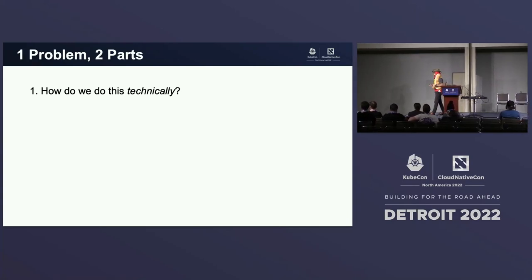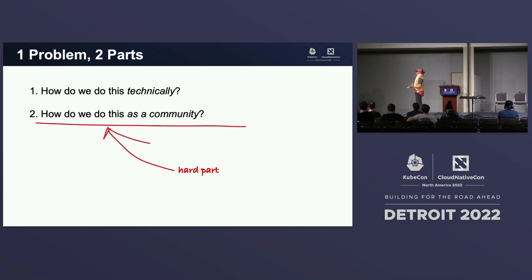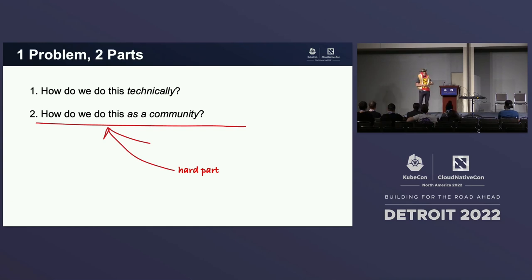That's the problem, but it's a problem that has two parts. One is how do we actually do that technically? And then, how do we actually do that with the community? For the people here who have worked in open source, you know that the harder part is working with people. Anyone can write an amazing API and an amazing tool, but how do you get people to agree on it?